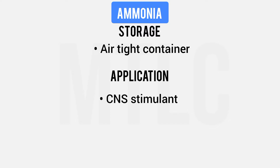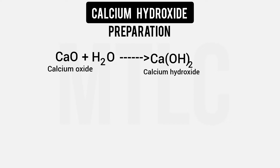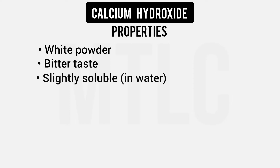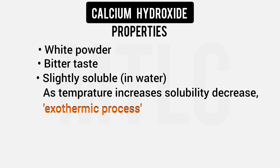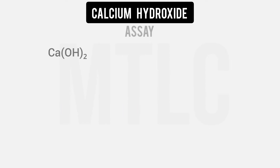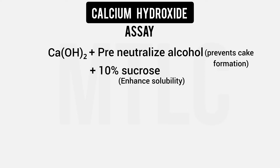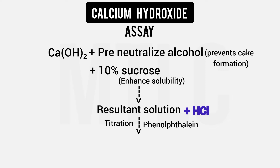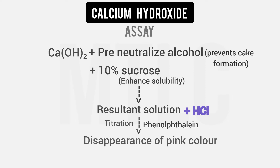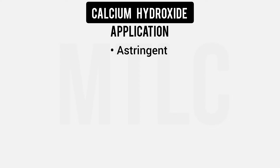Calcium hydroxide is used as a CNS stimulant and laboratory reagent. It appears as a white powder with a bitter taste and is slightly soluble in water. When temperature increases, solubility decreases — it is an exothermic reaction. To improve solubility, a 10% sugar solution is added, and alcohol is added to prevent cake formation. It is titrated against phenolphthalein; the endpoint is when the pink color disappears. Calcium hydroxide is an astringent and is used in zinc oxide cream preparation.